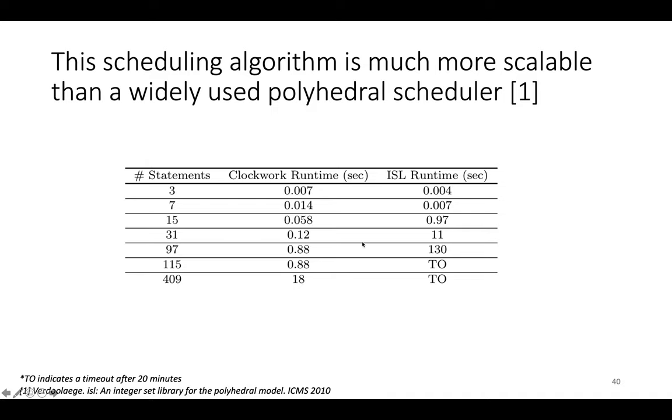At 31 statements, Clockwork is about 100 times faster than ISL. At 97 statements, it's even faster, somewhere between 100 and 1000 times.